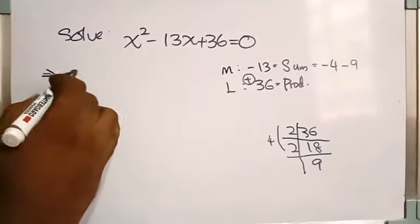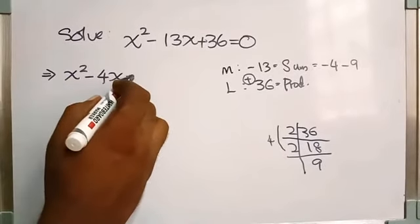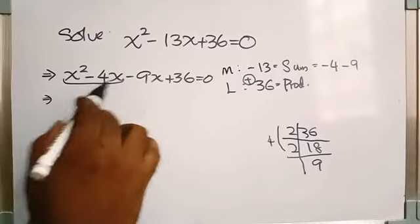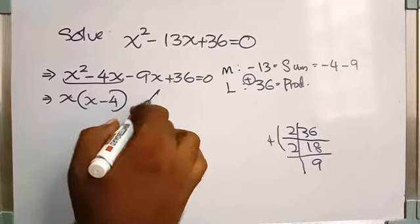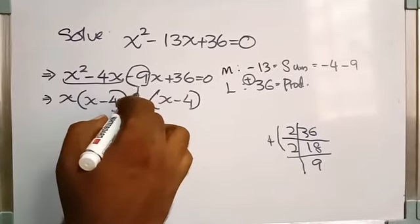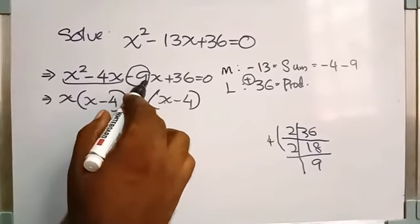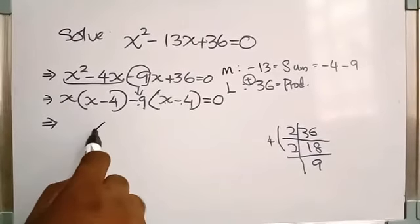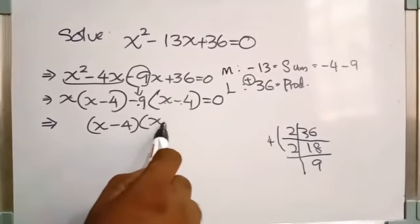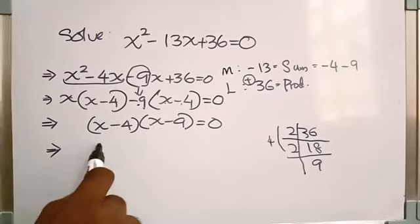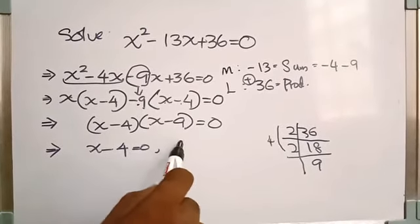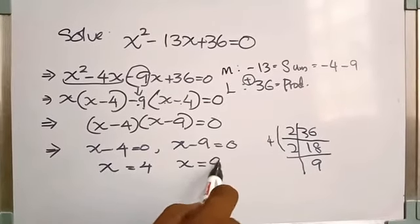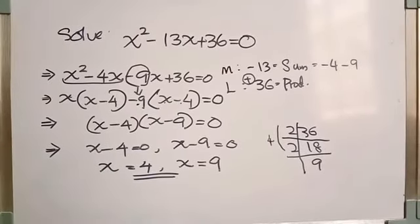So we get x squared minus 4x minus 9x plus 36 equals 0. Grouping: x is common, giving x minus 4. The common term for the second group is minus 9, giving (x minus 4)(x minus 9) equals 0. That implies x minus 4 equals 0 or x minus 9 equals 0. So x equals 4 or x equals 9 are the two solutions of this quadratic equation.